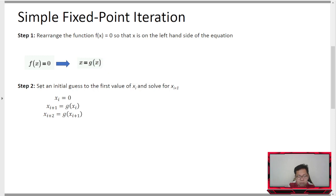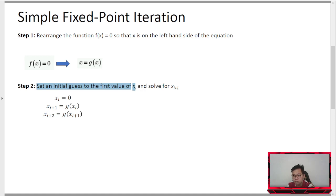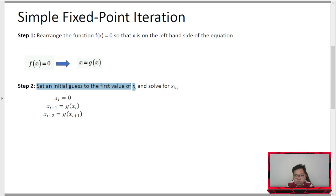Step two is to set the initial guess for the first value of our iteration. Usually, common initial values start at zero, but as I mentioned in previous videos, it is very important to properly select the initial value because it will have an impact on the number of iterations. The closer your initial guess is to the actual root, the fewer iterations needed. However, if you have no idea what the possible root is, it is always safe to assume a zero value.